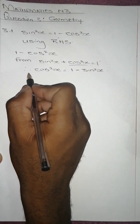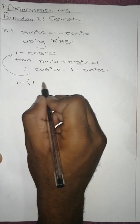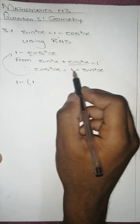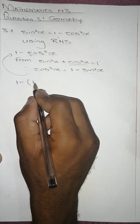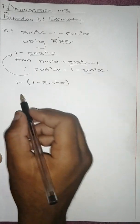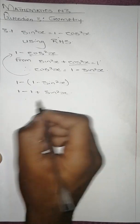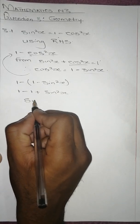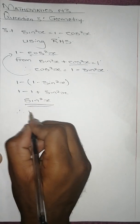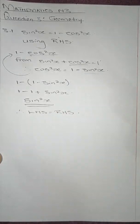Going back, we substitute cos squared x with (1 minus sine squared x), giving us 1 minus (1 minus sine squared x), which equals 1 minus 1 plus sine squared x, leaving us with sine squared x. Therefore left-hand side equals right-hand side, and we are done proving.